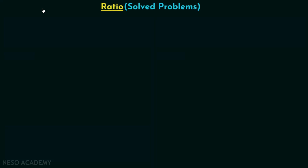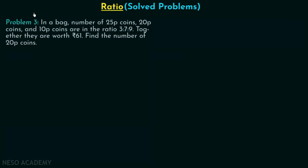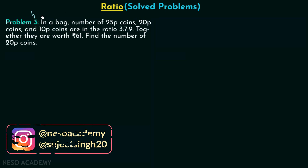In the previous lecture we solved two problems based on ratio and now we are going to solve the next two problems. Moving on to problem number three: in a bag, the number of 25 paise coins, 20 paise coins, and 10 paise coins are in the ratio 3:7:9. Together they are worth rupees 61. Find the number of 20 paise coins.